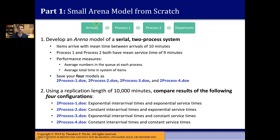In the first model, use exponential inter-arrival times in the create block and exponential service times in both process blocks. In the second model, use a constant inter-arrival time with exponential service times. The third model flips that: exponential inter-arrival times with constant service times — constant nine minutes at each process. Finally, the fourth model uses constant across all of them: constant ten minutes between arrivals, and constant nine minutes at each process. The structure of the system stays the same, but the input models change.